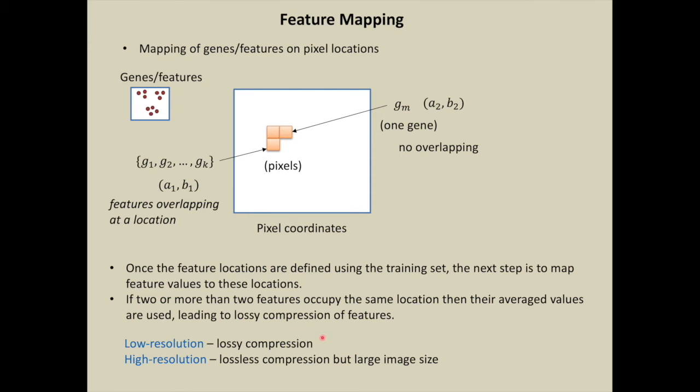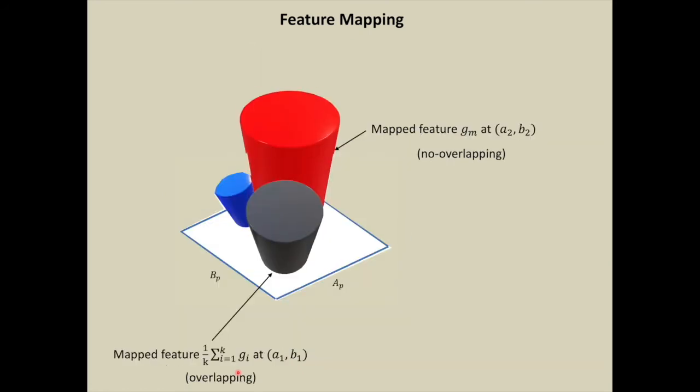For low resolution, we will get lossy compression, and for high resolution, we will get lossless compression but large image size.